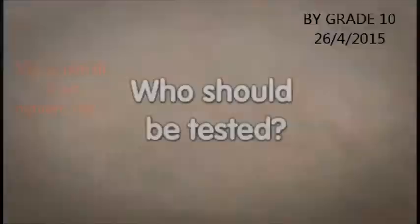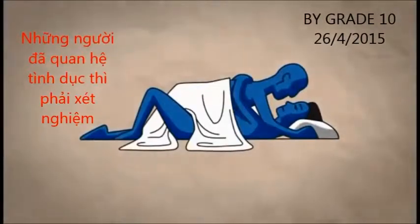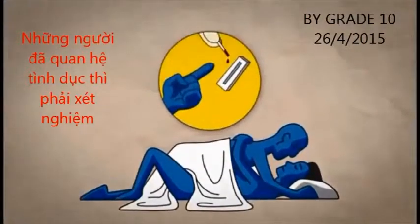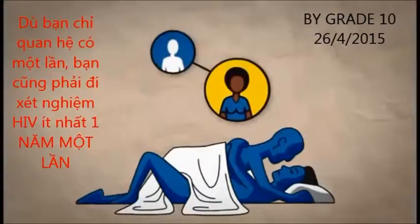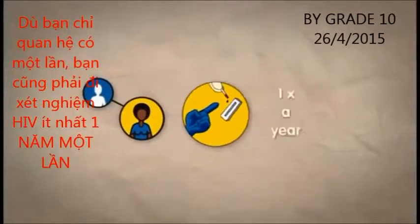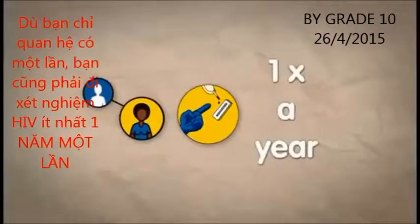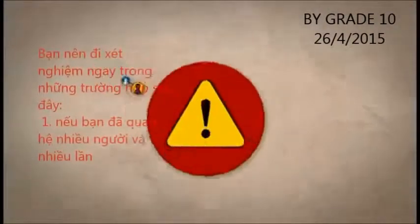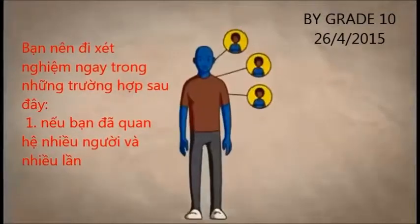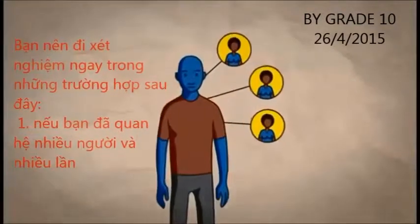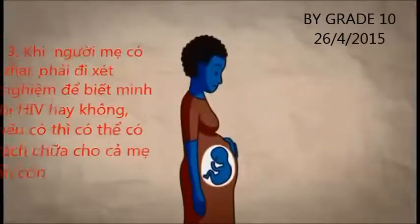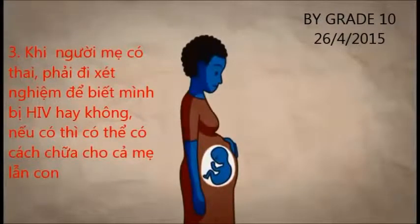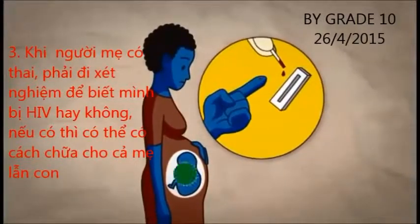Who should be tested? Everyone who has ever had sex should be tested. If you are having sex, even with just one person, you should be tested at least once a year. You should also be tested right away if you are having sex with more than one person, if you suspect that the person you are having sex with is having sex with someone else, or if you are pregnant, so you can protect yourself and your baby.